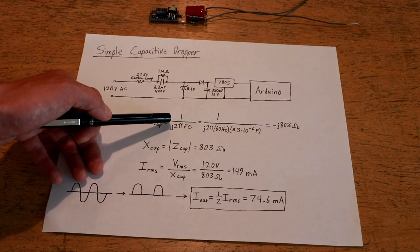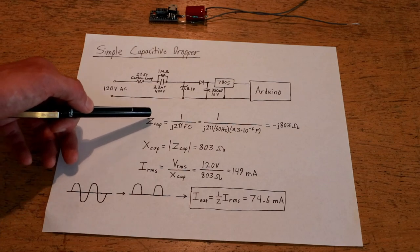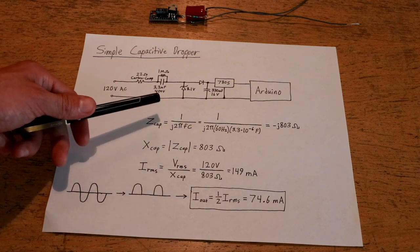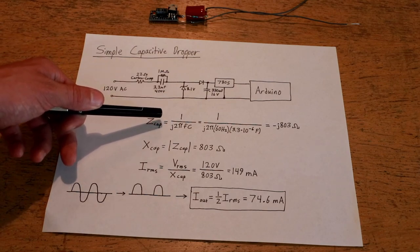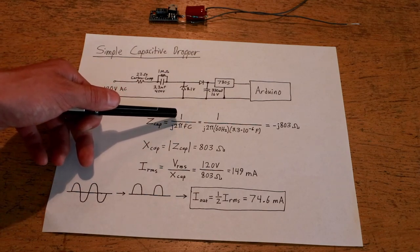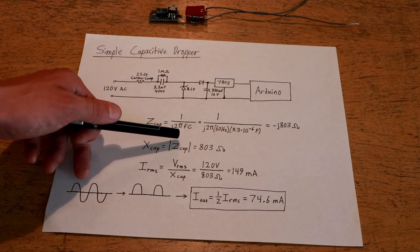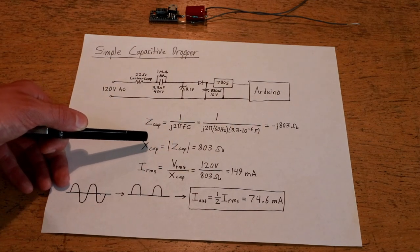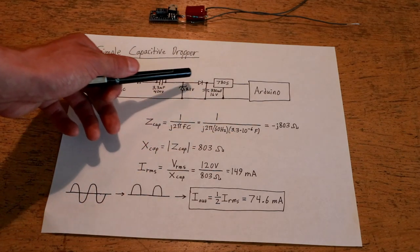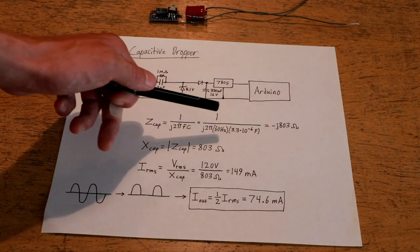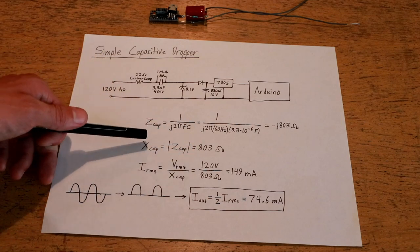Now you don't have to worry about the j if you're just calculating the reactance. The j is just a convenient tool for actually calculating the phase angle that will be produced by the capacitor when it's in an AC circuit. In reality, if you just want to build a capacitive dropper, you only have to worry about the magnitude of the impedance, which is the capacitive reactance. For a 3.3 microfarad capacitor, this will be about 803 ohms of capacitive reactance.